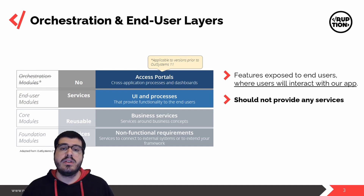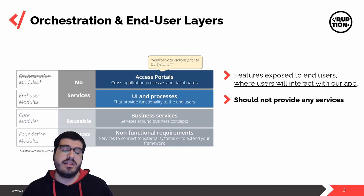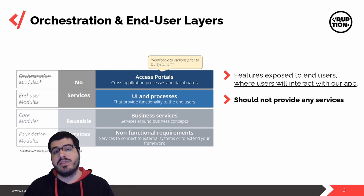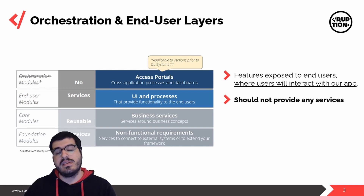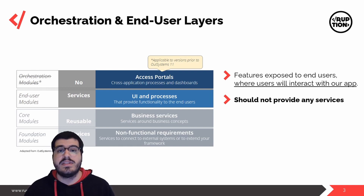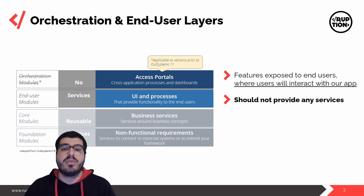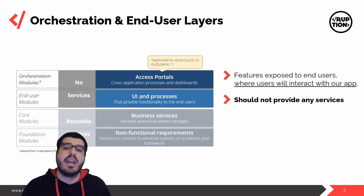On our last video we took a look at the architecture canvas and we saw that there was a difference between version 11 and versions prior to version 11 — specifically that on version 11 we no longer use the orchestration layer. Looking at the orchestration and the end-user layer, we'll see that they share the same similarities; for example, neither of them can have any services attached to them, and this is where our features will be available for end users to interact with and be in touch with all the processes in our applications.